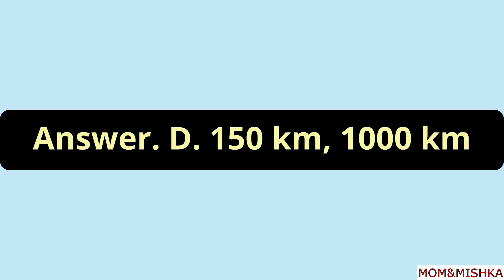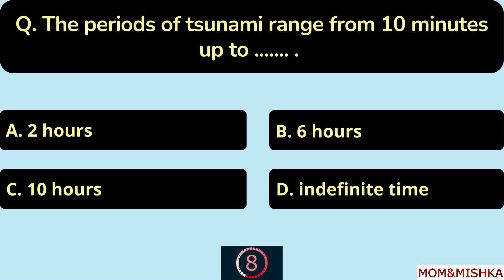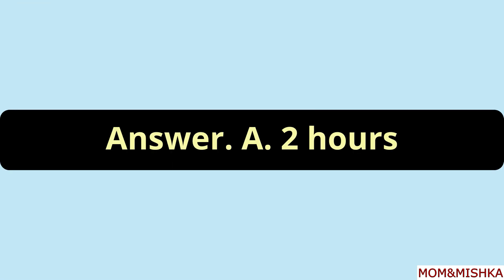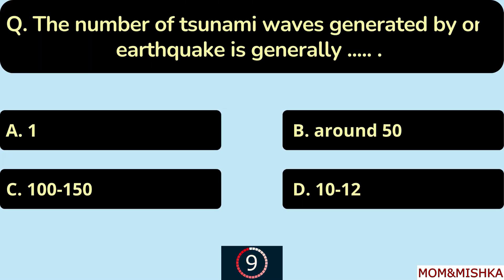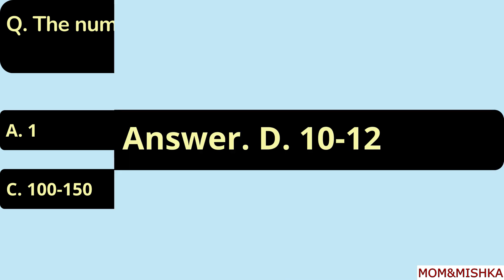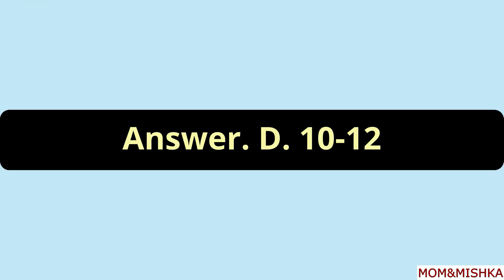The wavelengths of tsunamis range between 150 kilometers and 1,000 kilometers — option D. The periods of tsunami range from 10 minutes up to two hours — option A. The number of tsunami waves generated by one earthquake is generally 10 to 12 — option D.